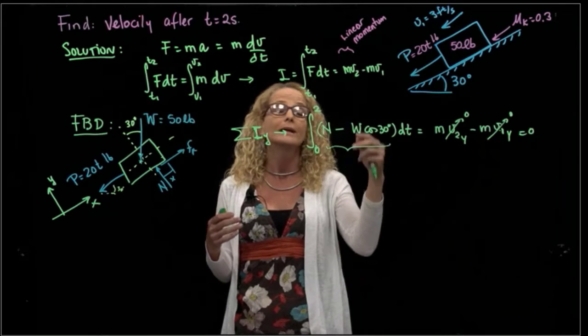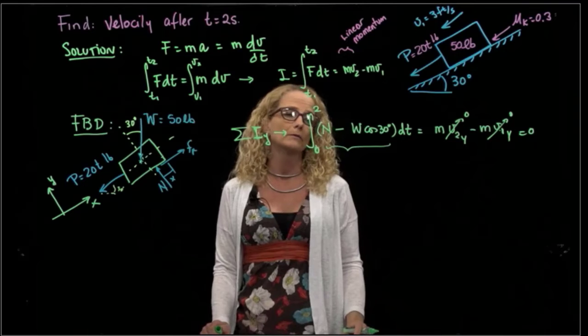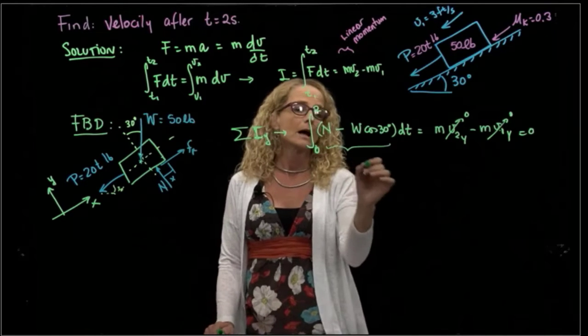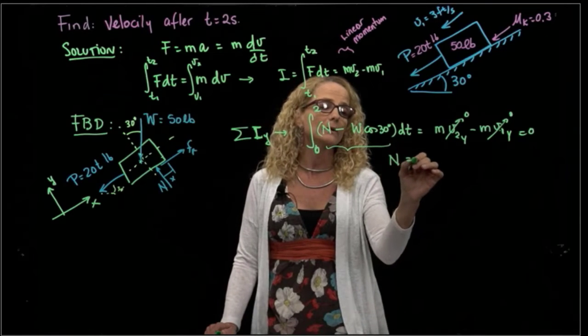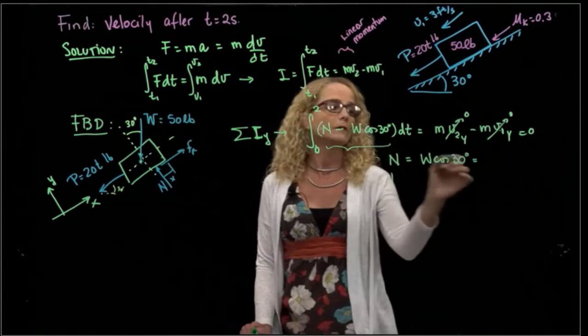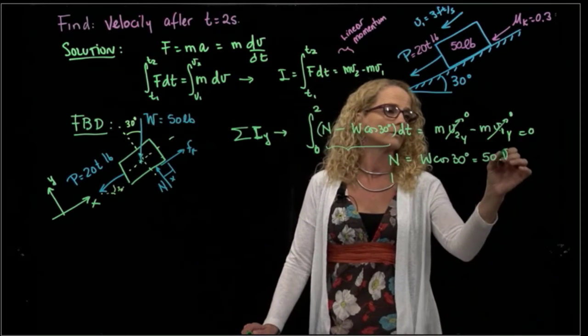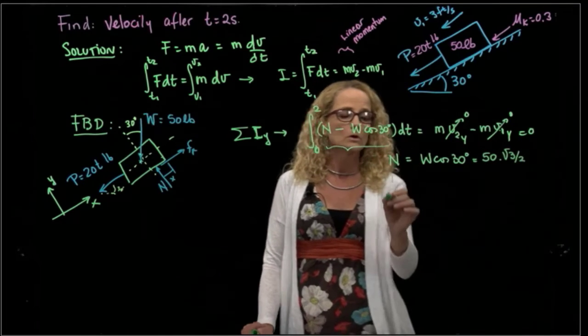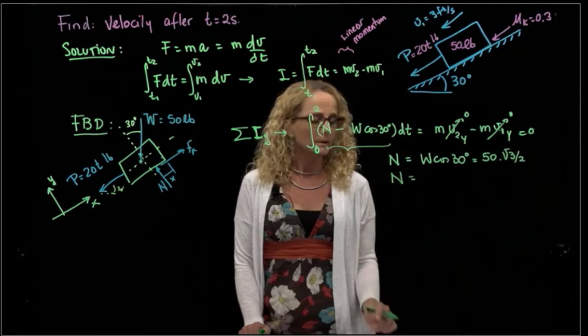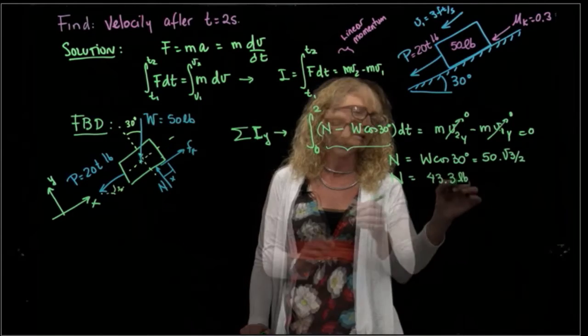That gives me exactly the same information if I would have added forces in Y direction. So when I do not have any motion, using the impulse of the force gives me the same information as adding forces. And that will be N equals weight cosine of 30. The weight is 50, and cosine of 30 is square root of 3 over 2. So my normal will be equal to 43.3 pounds.